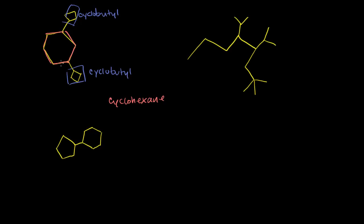We have two things attached to this ring. If you only had one thing attached to it, you wouldn't have to number. But when you have two things, you start numbering at one of them. You go in the direction so that the next group has the lowest number. Going counterclockwise gives us 1 and 3, versus clockwise which gives 1 and 5. So we have two cyclobutyls — dicyclobutyl — and they are at the 1 and 3 position on the cyclohexane main ring.